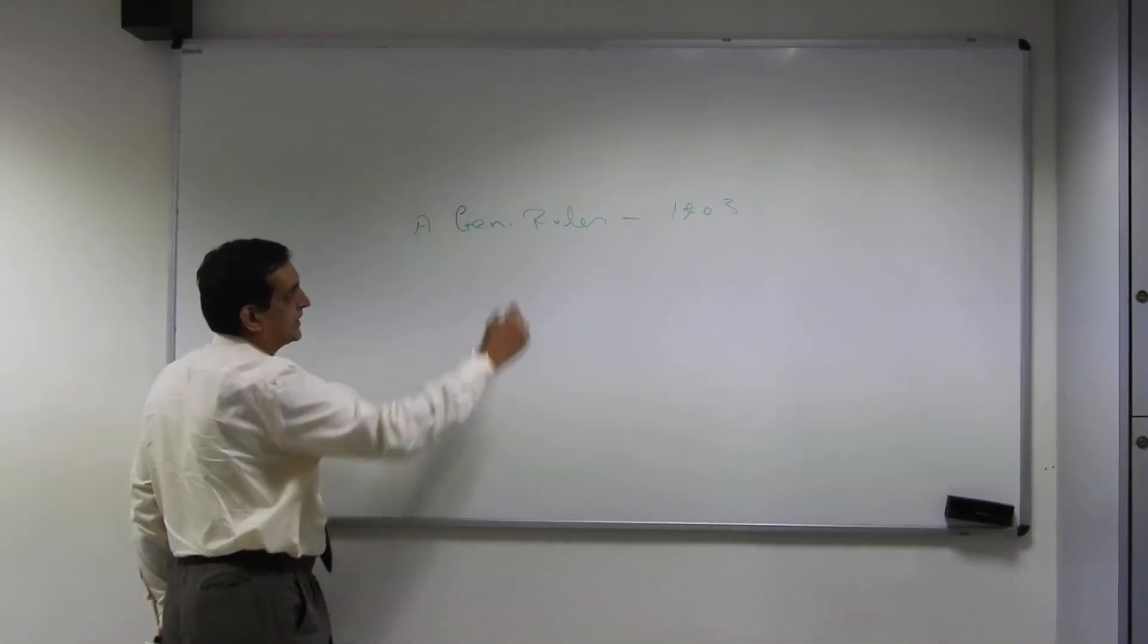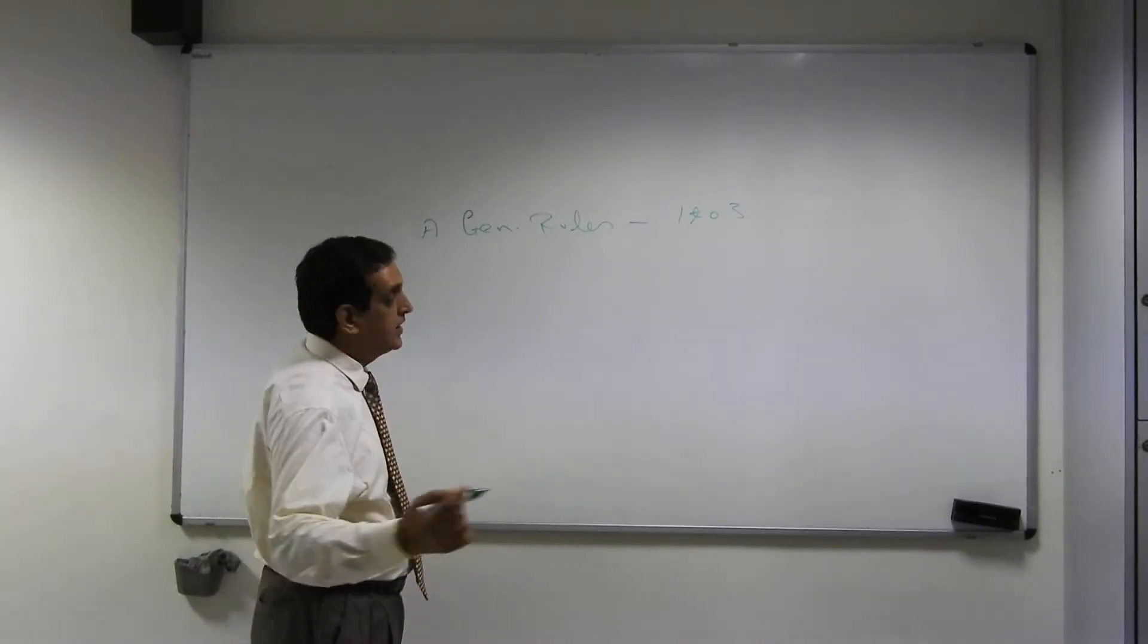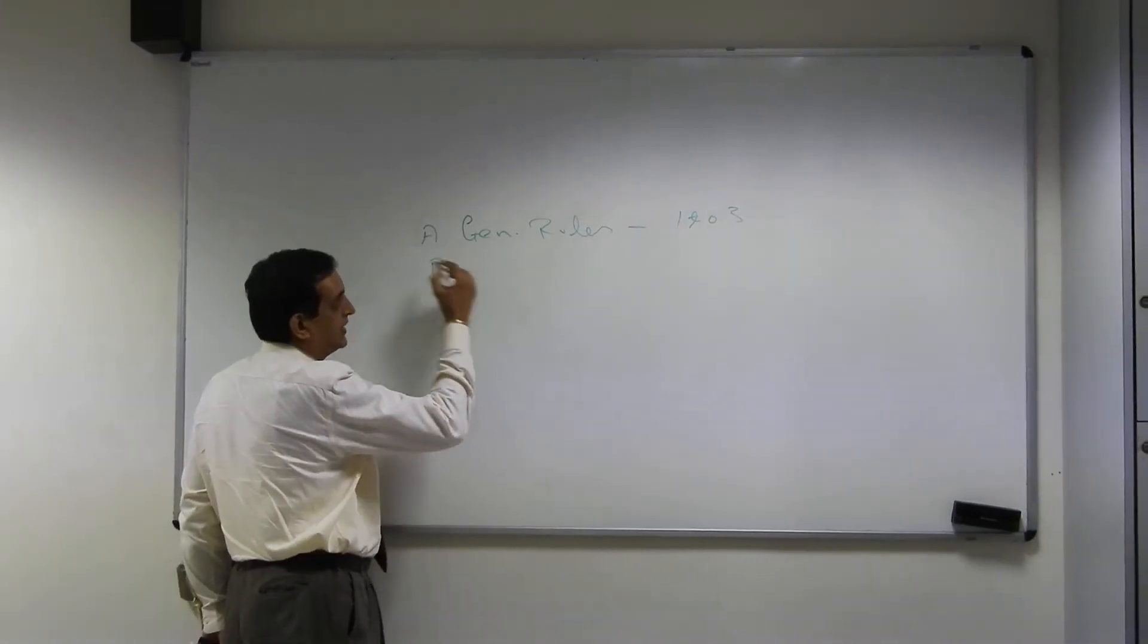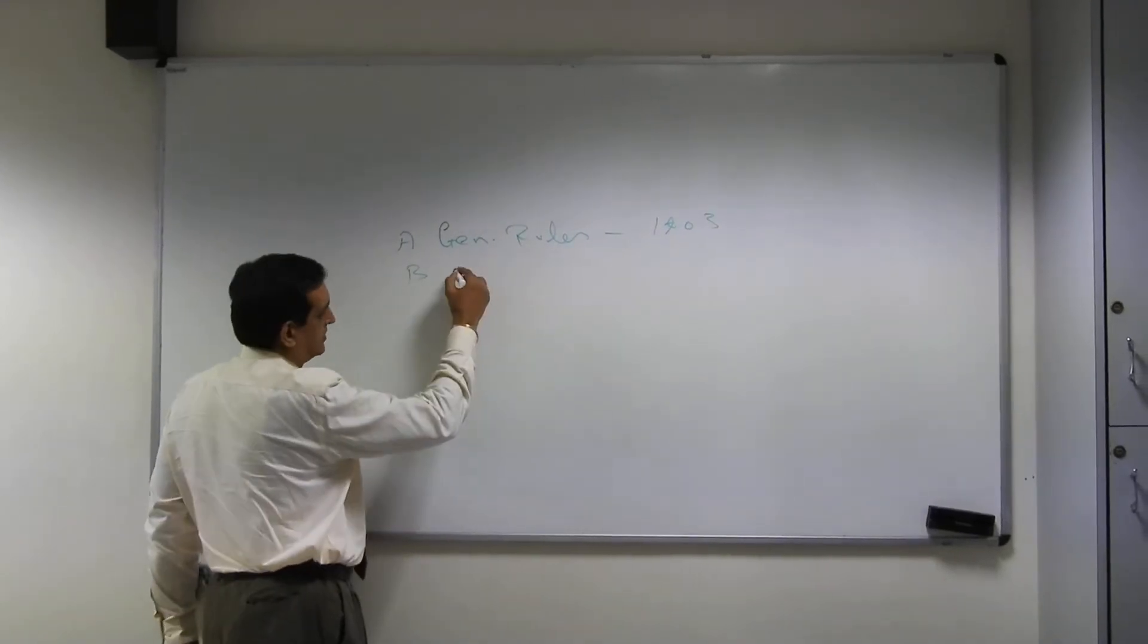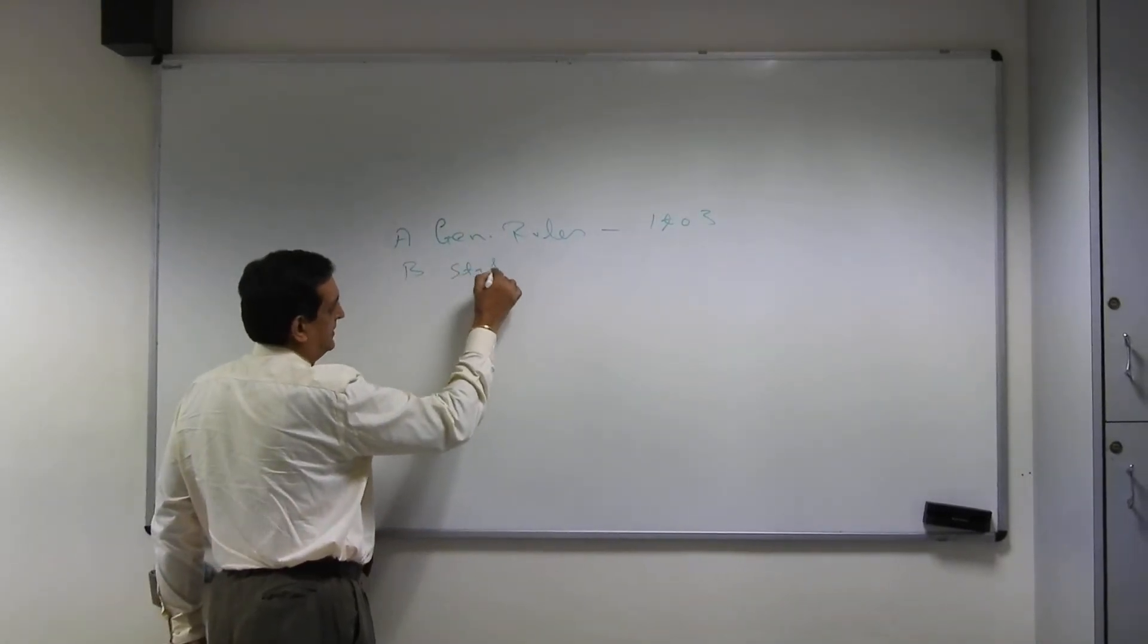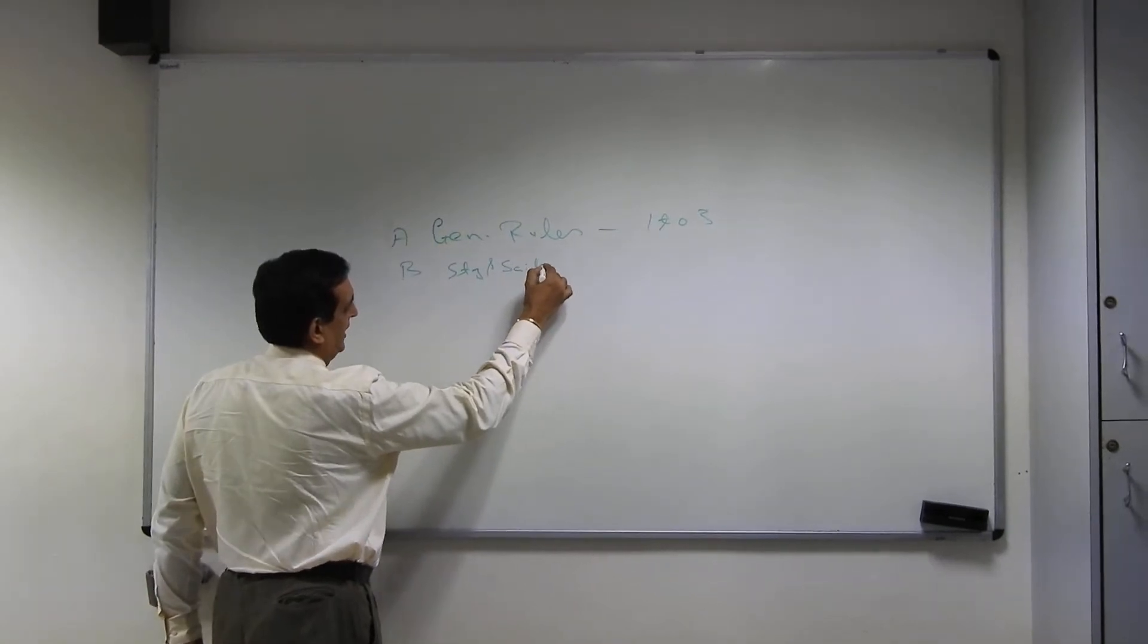You could say this is Part A, general rules 1, 2, 3. Then we have got Part B which is steering and sailing rules.